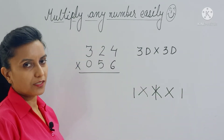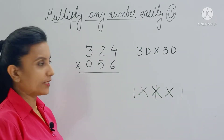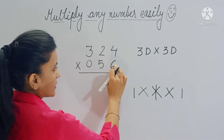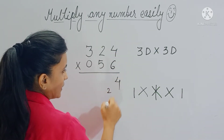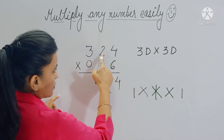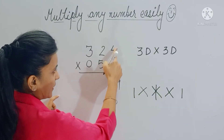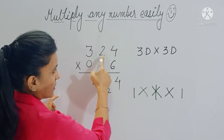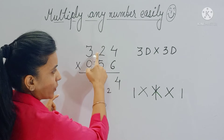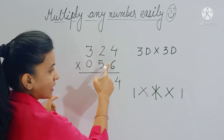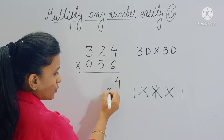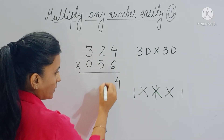I will be doing everything mentally since you have already learned this trick. Step one: four sixes are 24. Step two is cross — multiply and add — so two sixes are twelve, and four fives are twenty; twenty plus twelve is thirty-two, thirty-two plus two is thirty-four.